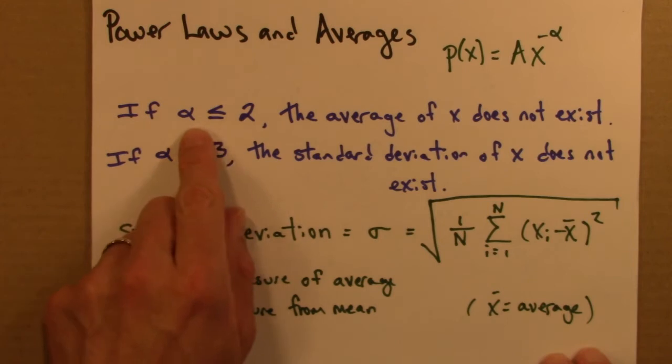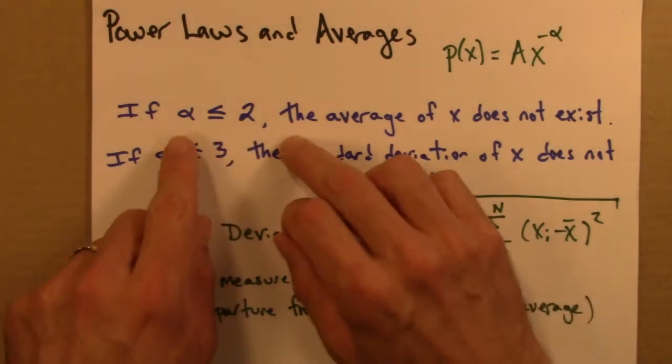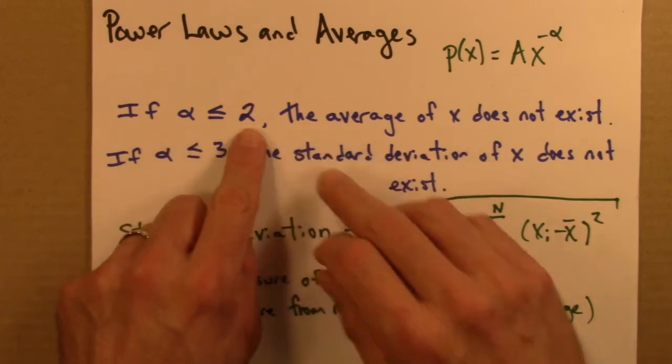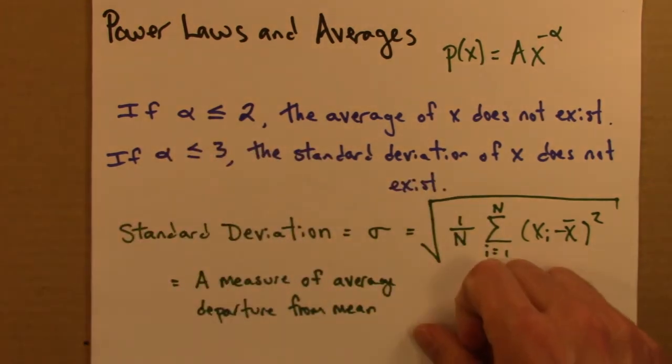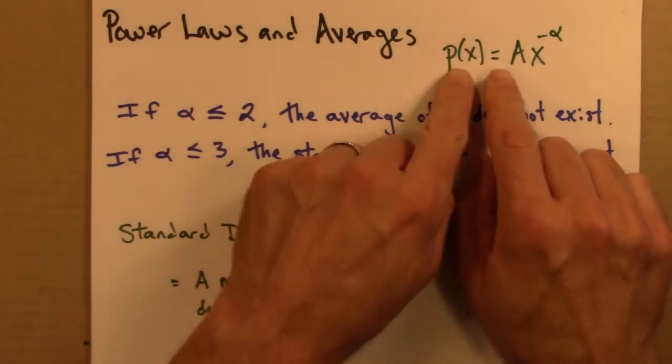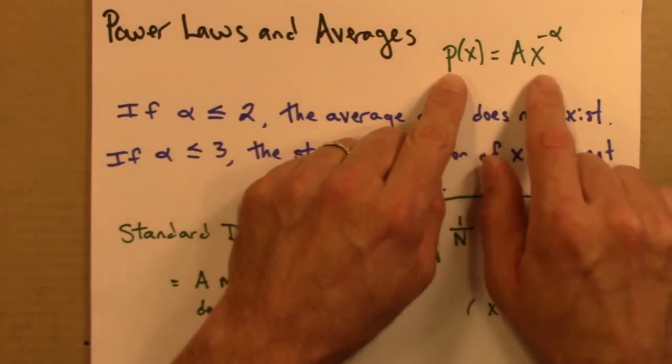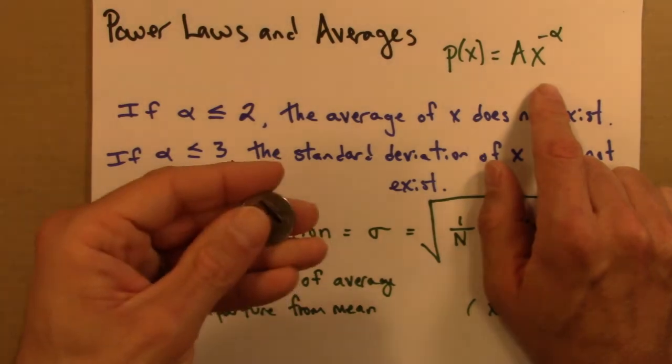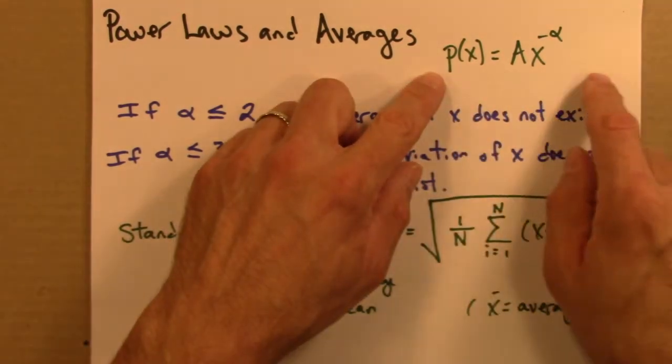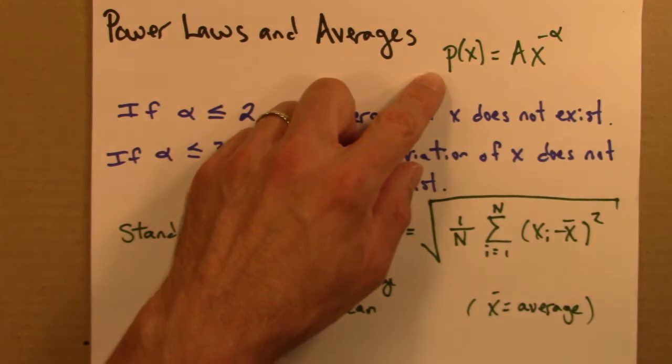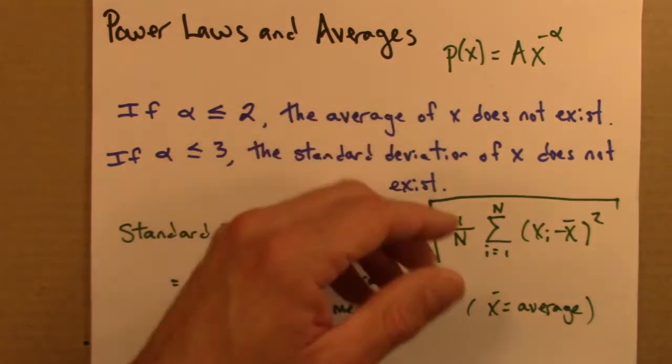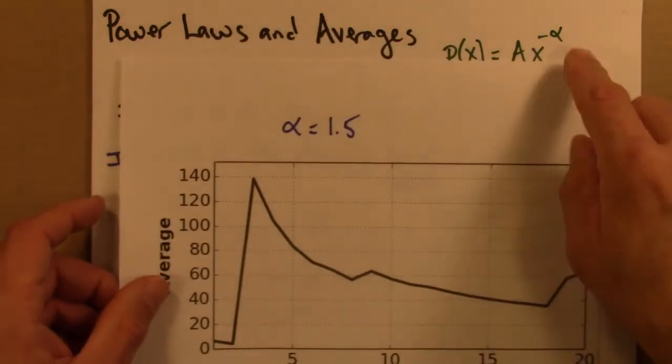So let's choose an alpha less than 2. I'm going to choose alpha of 1.5. And I'm going to do just like I did for the St. Petersburg game. But instead of tossing a coin, I'm going to sample from this distribution. And I wrote a program to do this, because that's not something that's easy to do with coins. So I'm just sampling from this distribution. And I might want to know what's the average value if I sample a bunch.